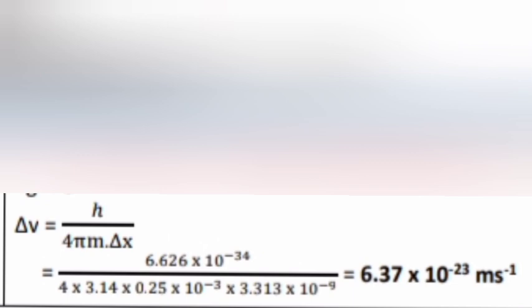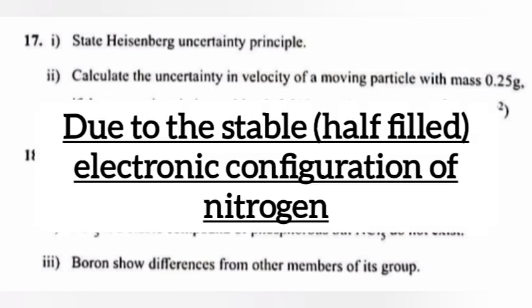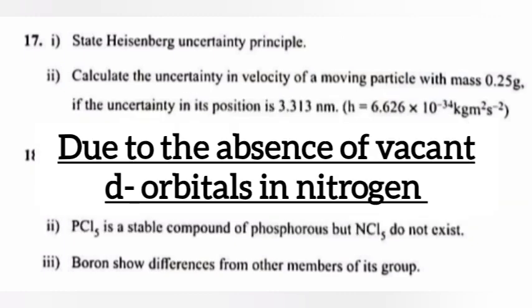Question 18: Account for the following. Part 1: First ionization enthalpy of nitrogen is greater than that of oxygen. Answer: Due to the stable half-filled electronic configuration of nitrogen. Part 2: PCl5 is a stable compound of phosphorus but NCl5 does not exist. Answer: Due to the absence of vacant d orbitals in nitrogen.